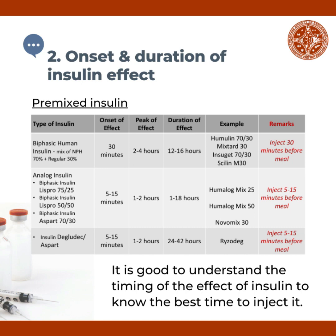Biphasic insulin analogs contain different proportions of a longer-acting basal and a rapid-acting component. The onset of effect is at 5 to 15 minutes, peak effect at 1 to 2 hours, and duration of effect at 1 to 18 hours. Examples are biphasic insulin lispro 75/25 or Humalog Mix 25, biphasic insulin lispro 50/50 or Humalog Mix 50, and biphasic insulin aspart 70/30 or NovoMix 30. These are injected 5 to 15 minutes before meals.